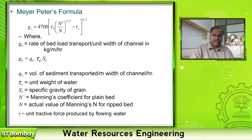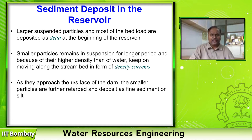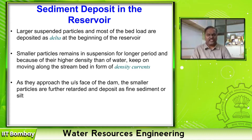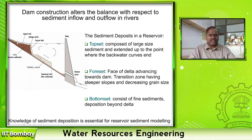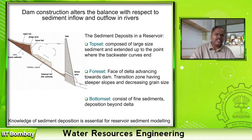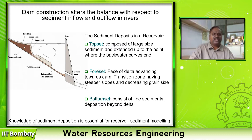No need to remember all these formulas, but remember the parameters used to estimate sediment load. Regarding sediment deposited in the reservoir: all the sediments carried by the river get deposited. The large suspended bed materials get deposited at the mouth of the reservoir — this is the dam. Because of the reduction in velocity of flow, the huge coarse sediments get deposited at the mouth, which is also called a delta. Not only on the downstream side — the upstream side at the dam also has this delta.